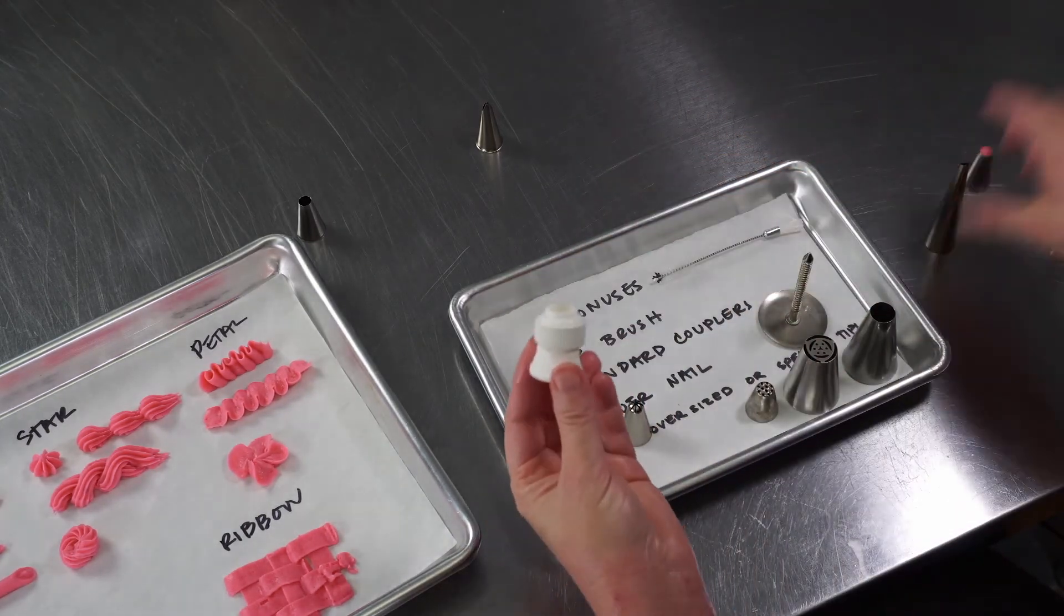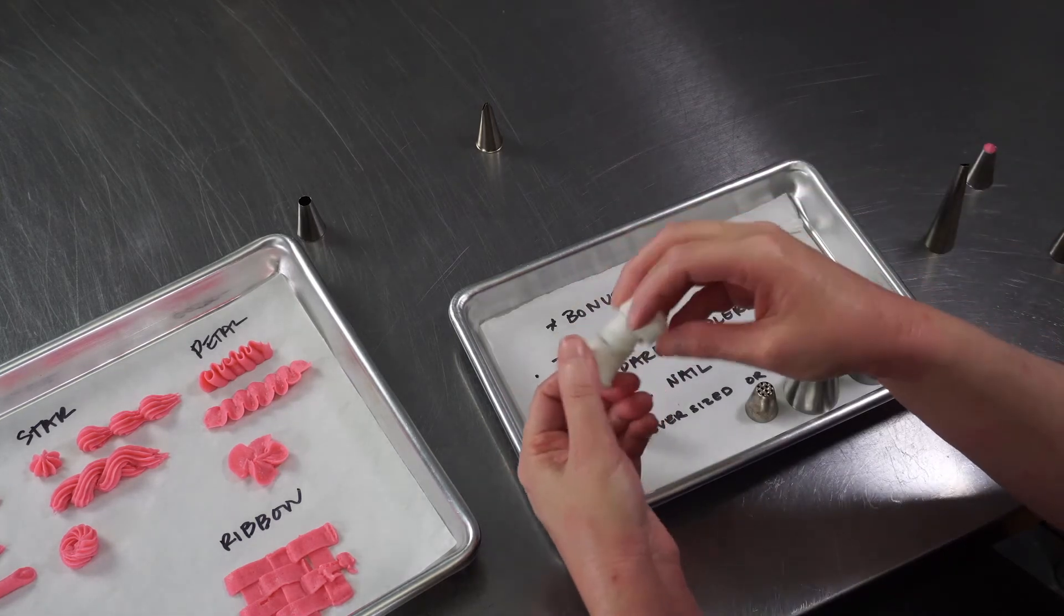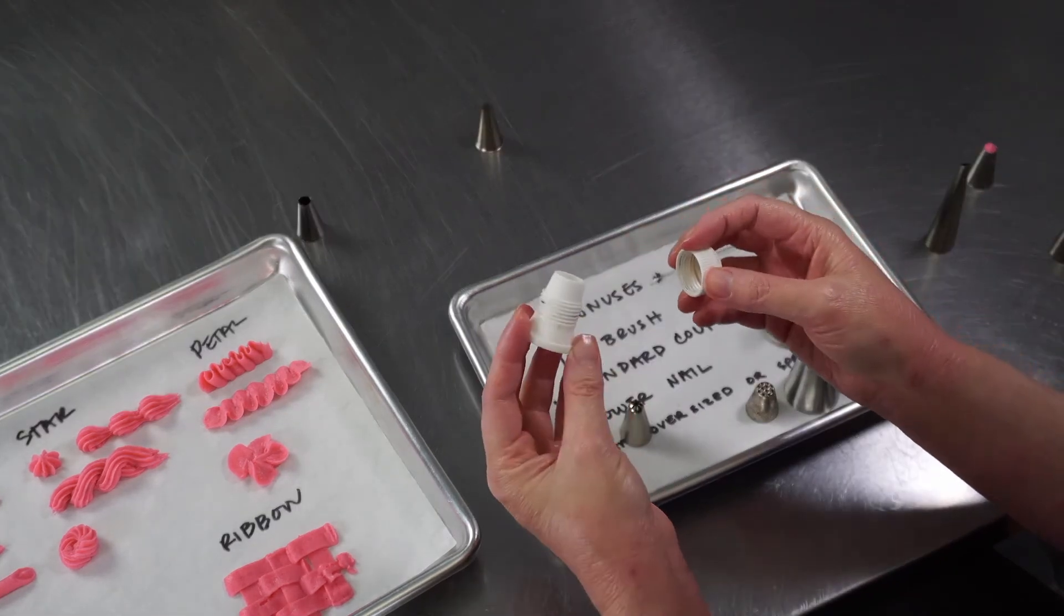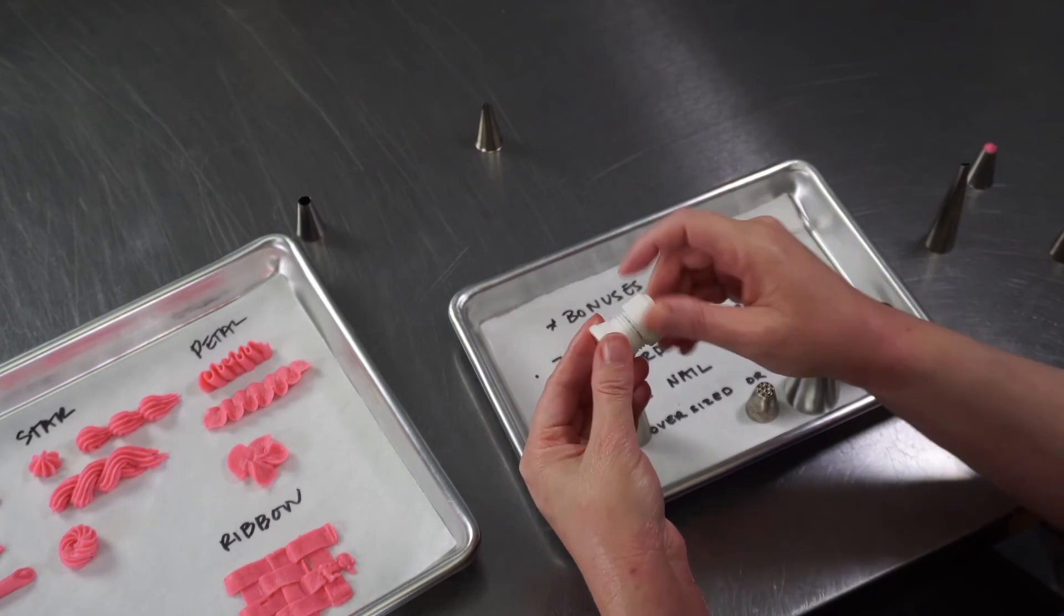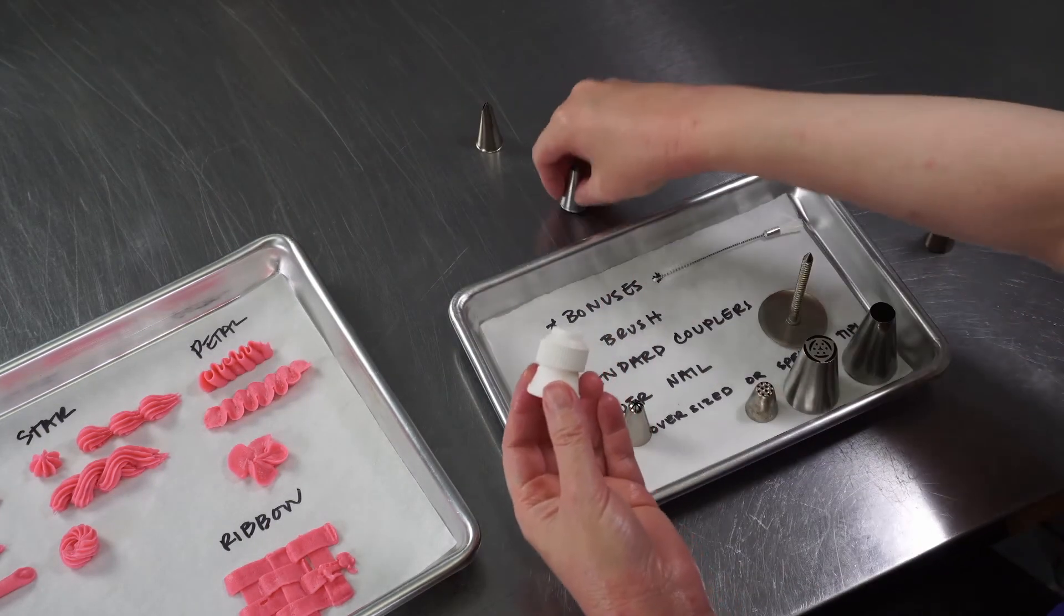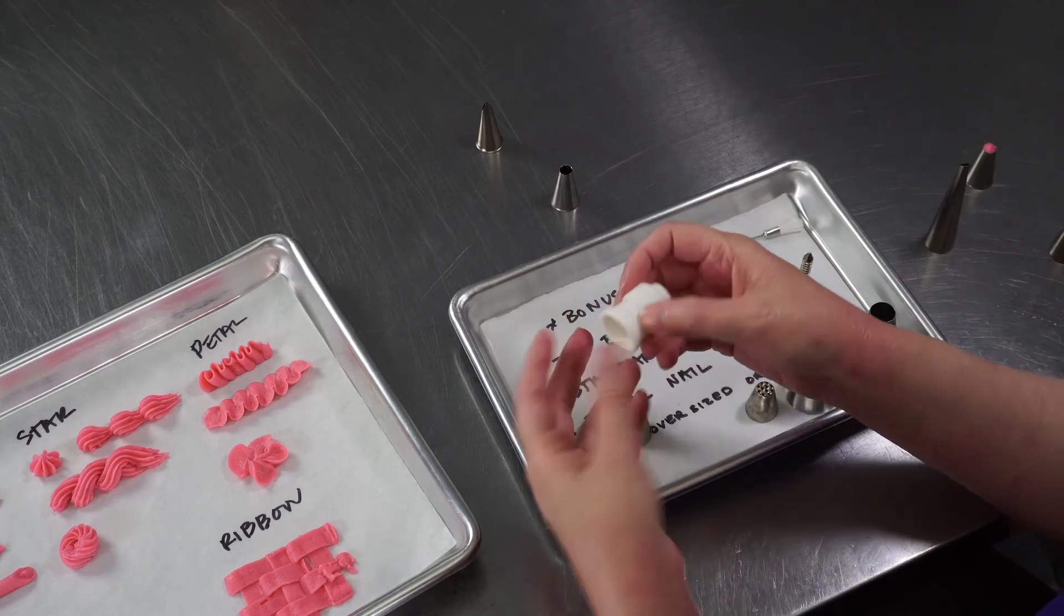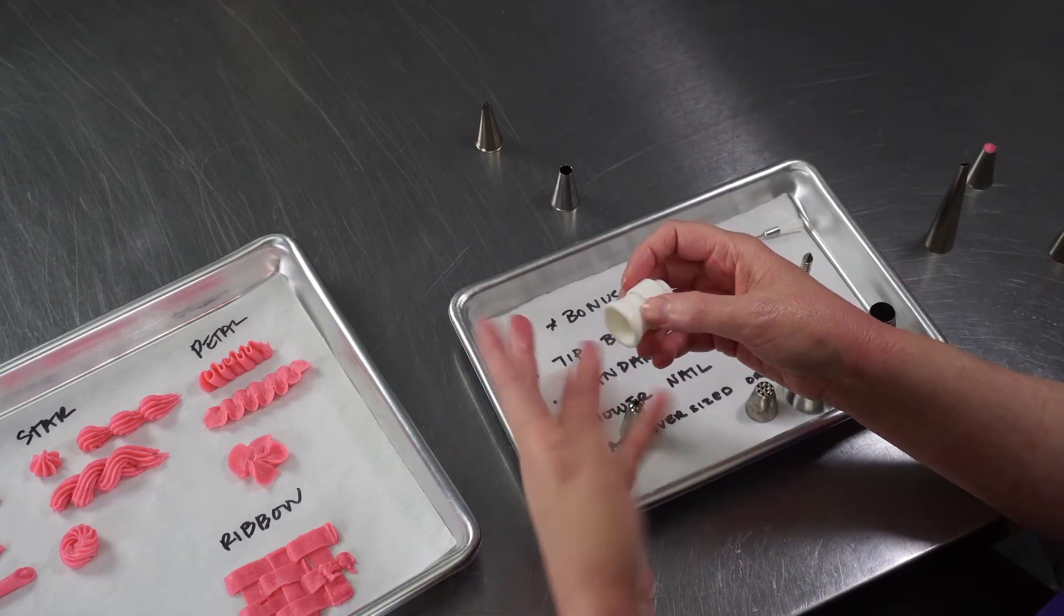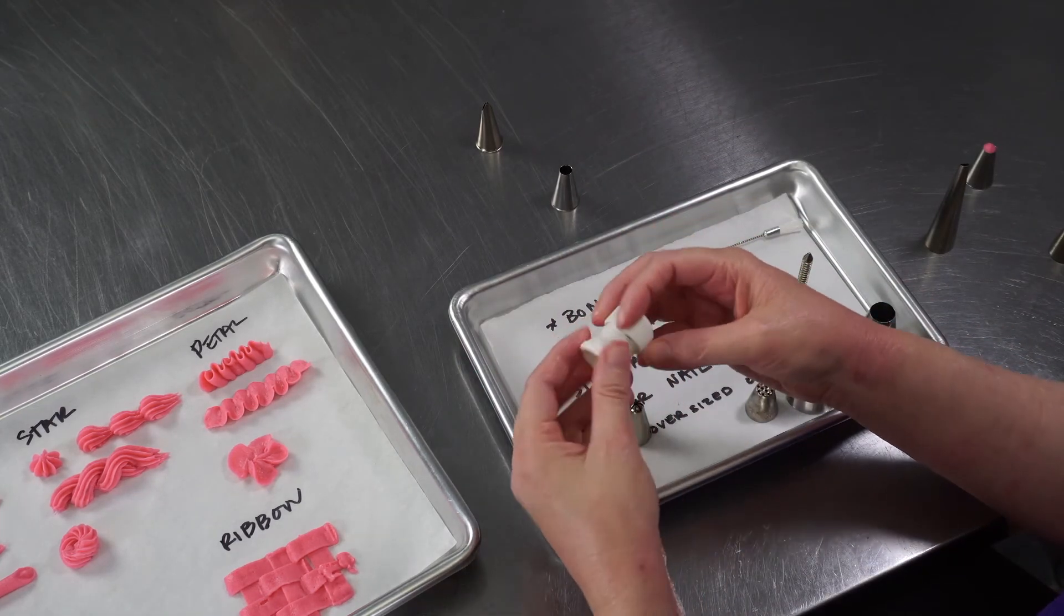Another thing would be couplers. A lot of kits will come with one or two standard couplers. These are going to be used for your standard size tips and it'll allow you to do what I've done in this video, which is use one bag and change it for multiple uses with multiple tips.